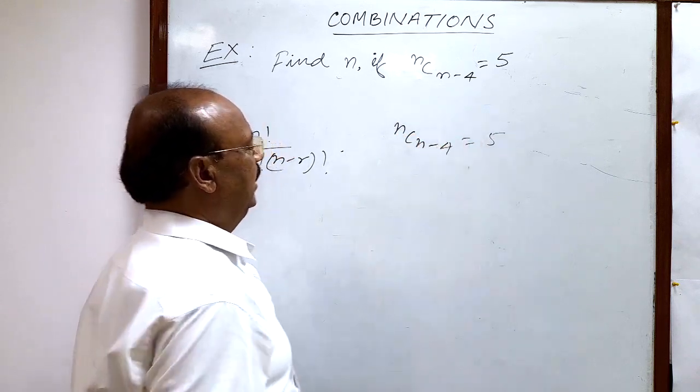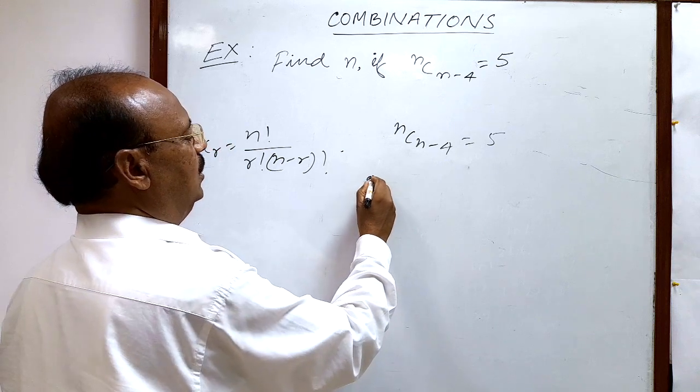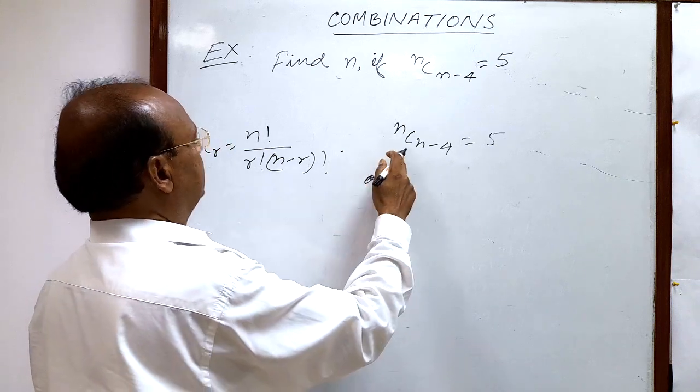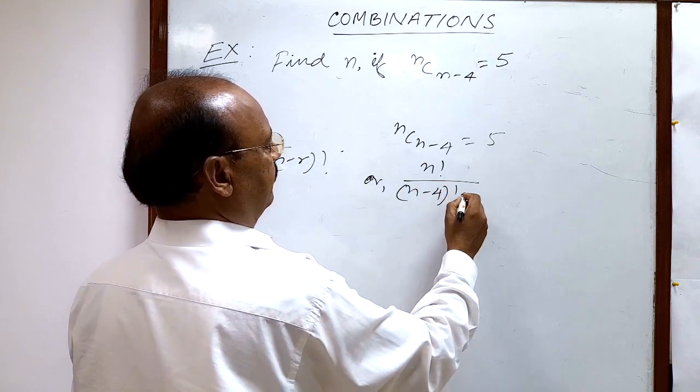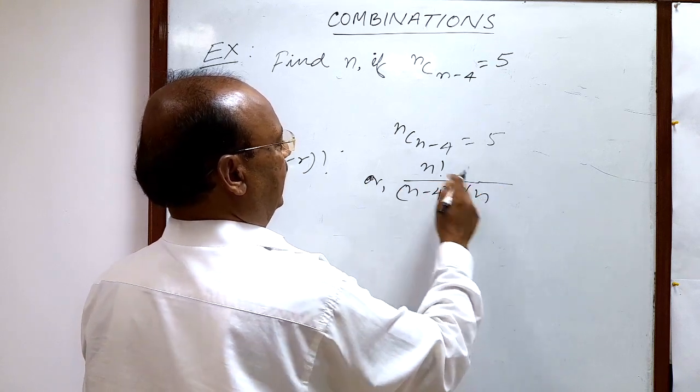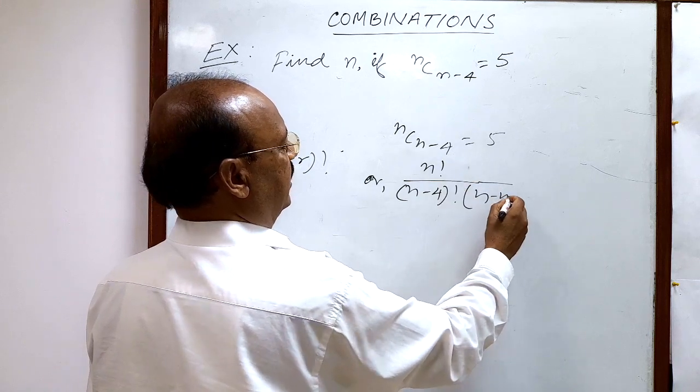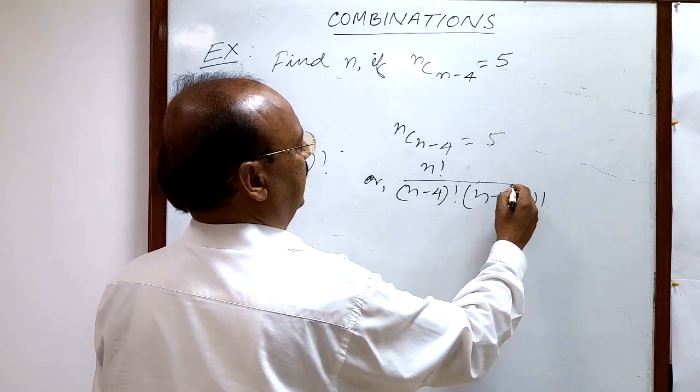Here we have given nC(n-4) equals 5. With the help of this formula, we can write this as n factorial by (n-4) factorial times (n - (n-4)) factorial, which is equal to 5.